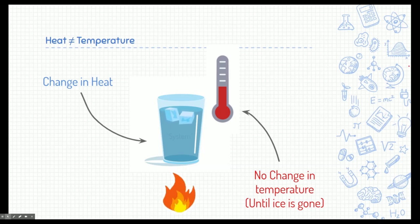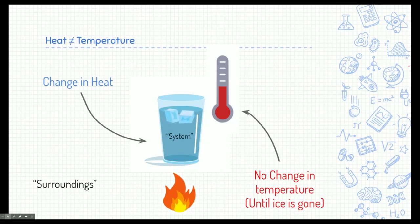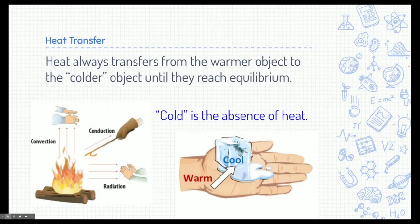Two important words: the ice water is known as our system — it's what we're focusing on. Everything else affecting our system is called the surroundings. Heat always transfers from warmer objects to colder objects until they reach equilibrium. Cold is just the absence of heat, so there's always heat transfer going on — like putting a piece of ice on your hand, your hand warms the ice.